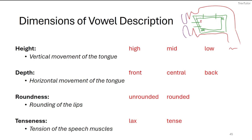One way to hear tense vs. lax is the difference between the sounds /iː/ and /ɪ/, as in the words 'beat' and 'bit.' They're very close in terms of place in the mouth. The only difference is that with 'beat' your tongue is tense, and in 'bit' it's not as tense — it's a little bit more towards the center.